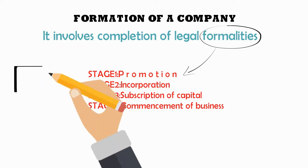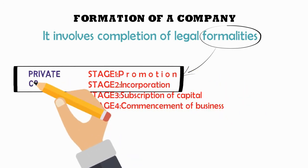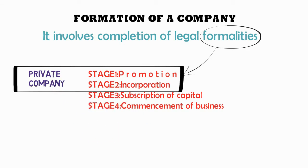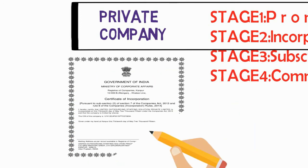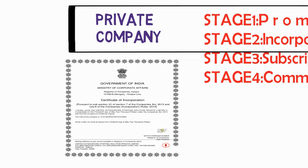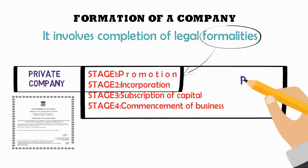Stage one and two — promotion and incorporation — are the stages required for a private company. If someone is going to start a private company, they have to complete stage one and stage two to start their business activities. A private company can start its business activity after getting the certificate of incorporation from the government, that is, after stage two.